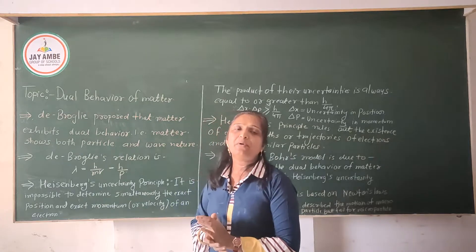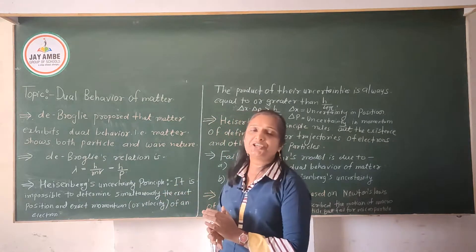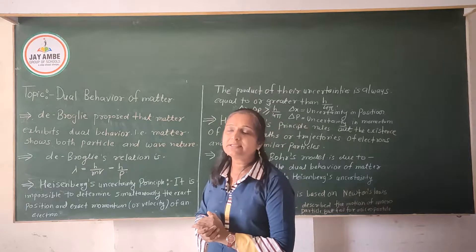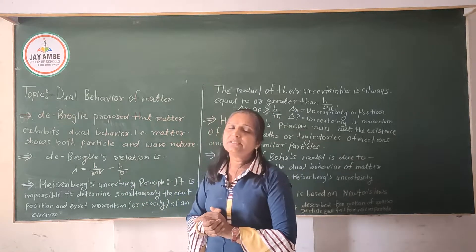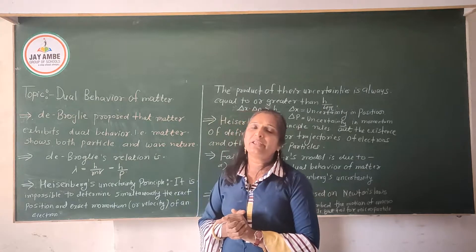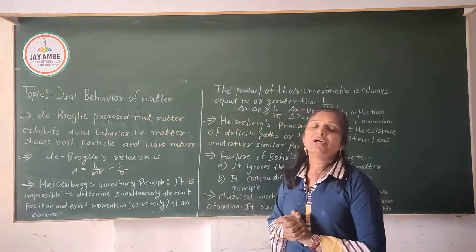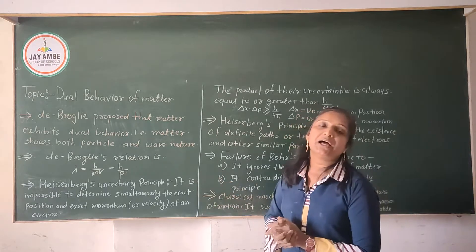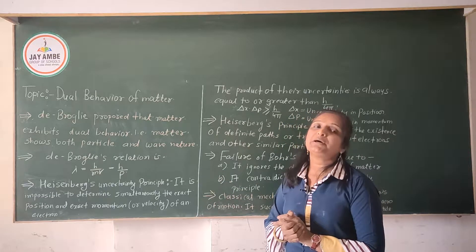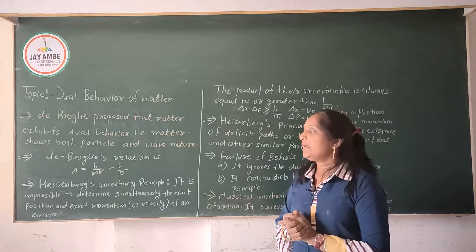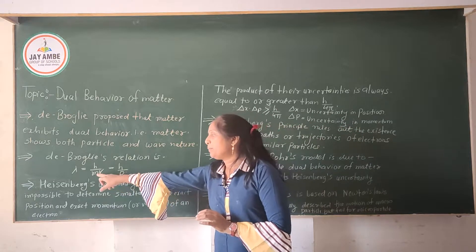This is a very important contribution by de Broglie, with a lot of explanation in quantum mechanics. De Broglie gave both natures — particle nature and wave nature — in one relation. That was lambda is equal to h upon mv, and that equals h upon p, where p is momentum.